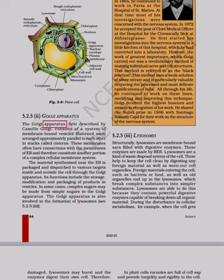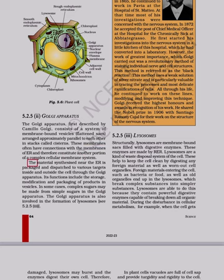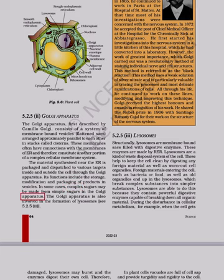5.2.5.2 Golgi apparatus: The Golgi apparatus, first described by Camillo Golgi, consists of a system of membrane-bound vesicles — flattened sacs — arranged approximately parallel to each other in stacks called cisternae. These membranes often have connections with the membranes of ER and therefore constitute another portion of a complex cellular membrane system. The material synthesized near the ER is packaged and dispatched to various targets inside and outside the cell through the Golgi apparatus. Its functions include the storage, modification and packaging of products in vesicles. In some cases, complex sugars may be made from simple sugars in the Golgi apparatus. The Golgi apparatus is also involved in the formation of lysosomes.